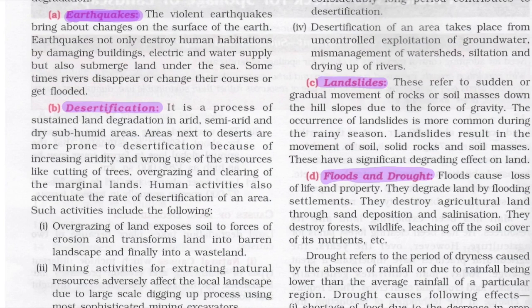Desertification is a process of sustained land degradation in arid, semi-arid, and dry sub-humid areas. Areas next to the desert are more prone to desertification because of increasing aridity and wrong use of resources — such as cutting down trees, overgrazing, and clearing of marginal lands — which leads to desertification.